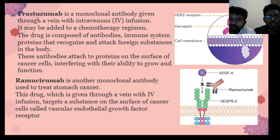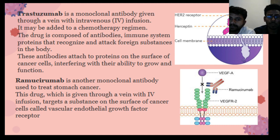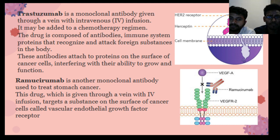For example, trastuzumab and ramucirumab. Both are monoclonal antibodies which are given through intravenous infusion and both are added to chemotherapy regimens. These drugs are composed of antibodies and proteins that recognize and attack foreign substances in the body. These antibodies usually attach to the surface of cancer cells and interfere with their ability to grow and function.